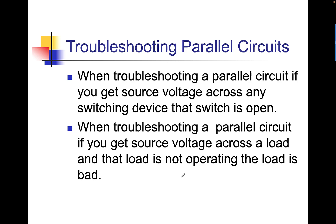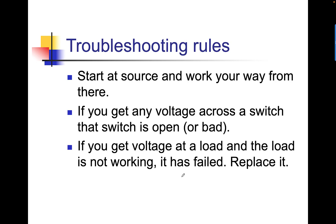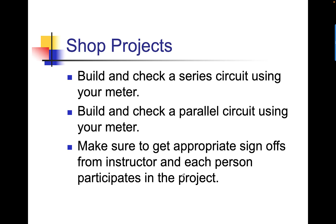When troubleshooting a parallel circuit, if you get source voltage across any switching device, that switch is open. When troubleshooting a parallel circuit, if you get source voltage across a load and the load is not operating, the load is bad. Don't overanalyze it. If you get 240 volts or source voltage across a load and the load is not operating, the load is bad. Start at the source and work your way from there. Use the hopscotch method. Put one of your meter leads at source. Leave it there. If you get any voltage across a switch, it's open or sometimes bad. If you get voltage across a load and the load is not working, it has failed. Replace it.